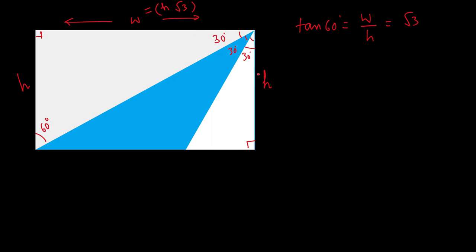Since √3 is approximately 1.732, w is obviously more than h. Now we have just one variable — h — and w can be represented in terms of h. The top triangle area a1 equals half times w times h, and substituting w = h√3, we get a1 = (h√3 × h)/2 = h²√3/2. Now let's find the blue region area.